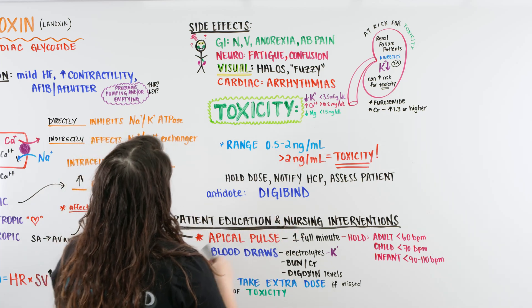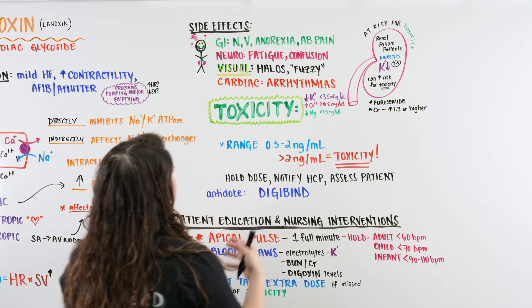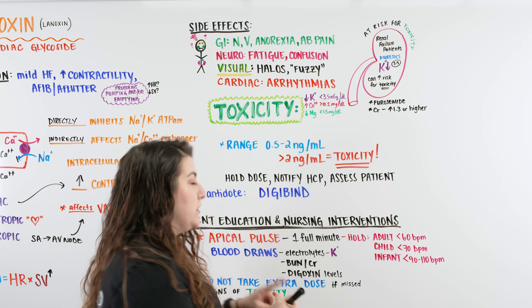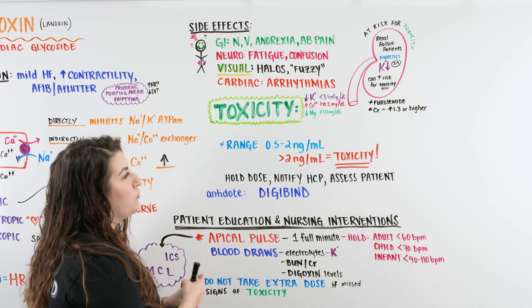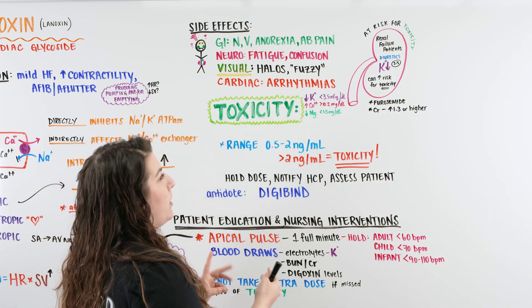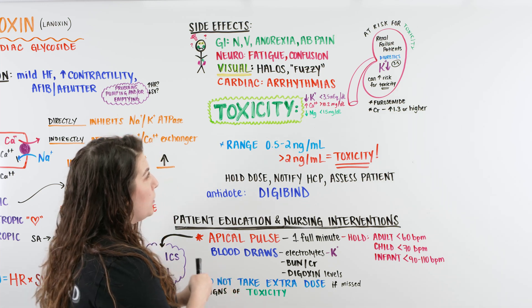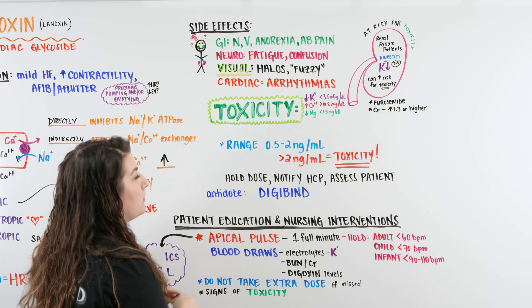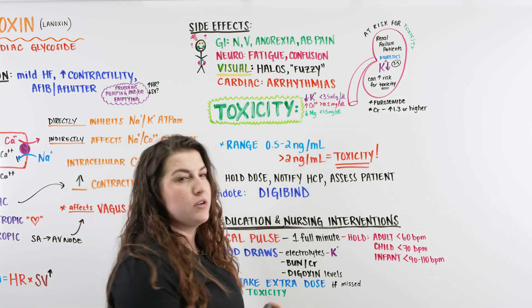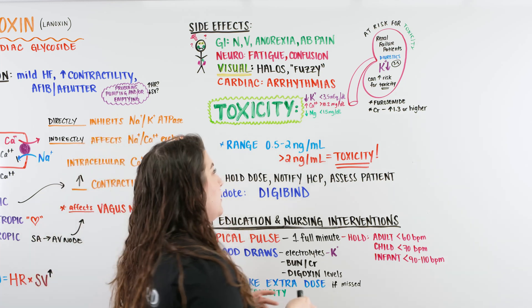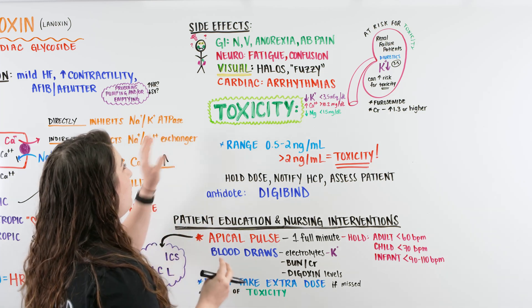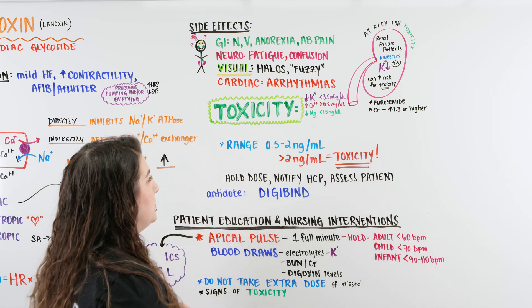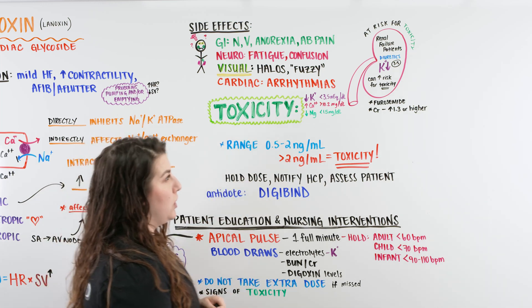We're also looking at visual side effects such as blurry vision, fuzzy vision, yellow-green halos, or trouble reading. Additionally, a cardiac arrhythmia — if the patient is on telemetry and there's an arrhythmia that wasn't there before — is a concern. All of these side effects could indicate that our patient is in digoxin toxicity.